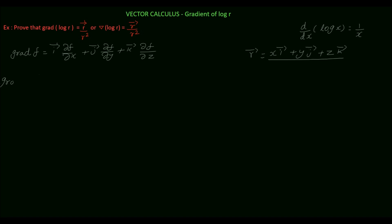The gradient of log r is equal to i vector times ∂/∂x of log r, plus j vector times ∂/∂y of log r, plus k vector times ∂/∂z of log r.